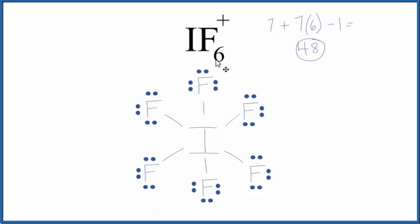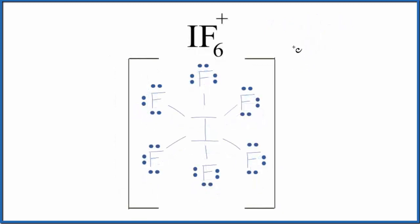This is the Lewis structure for IF6+. Because it's an ion, we should put brackets around it and write a positive sign out here to show that we have this charge.